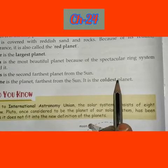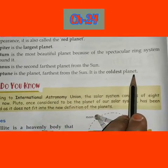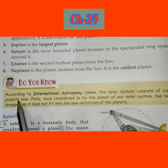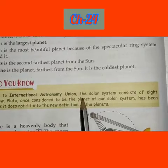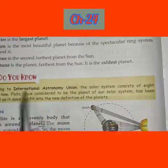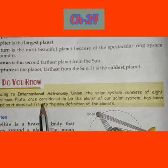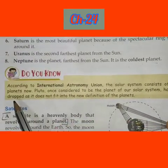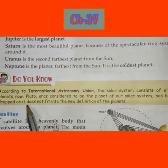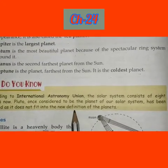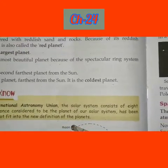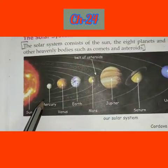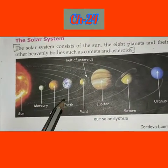Neptune is the farthest planet from the sun and is also the coldest planet. According to the International Astronomical Union, the solar system consists of eight planets. Pluto, once considered to be a planet of our solar system, has been dropped as it does not fit into the new definition of a planet.